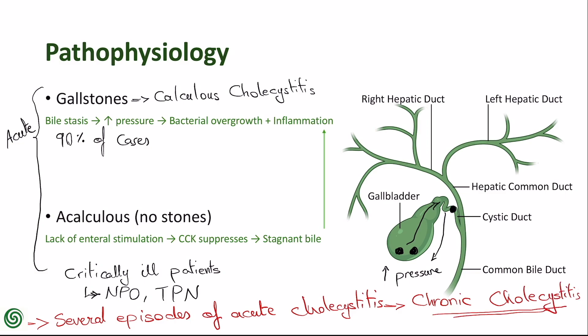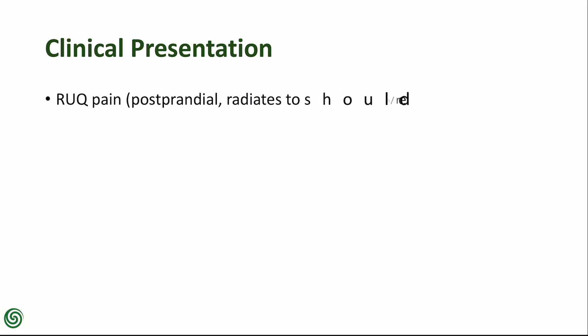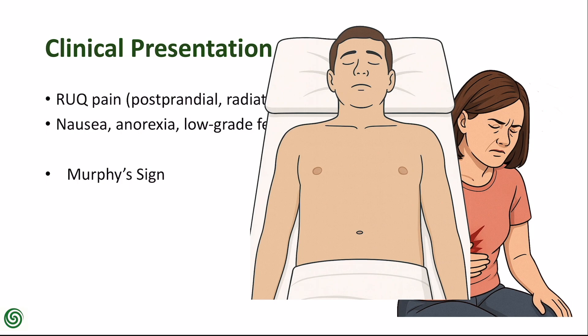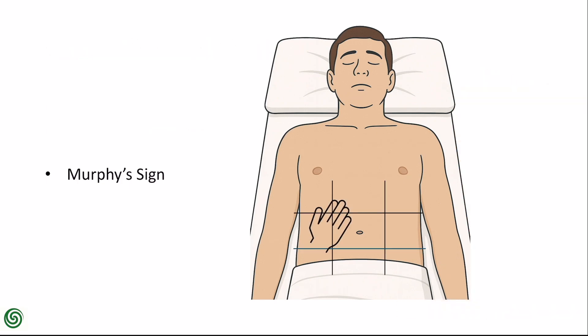The hallmark symptom is right upper quadrant pain, typically postprandial, radiating to the right shoulder or back. Pain may be steady and severe. Associated symptoms include nausea and low-grade fever. Murphy's sign is a key clinical finding — it is considered positive when palpation over the right upper quadrant during inspiration causes the patient to abruptly stop inhaling due to pain.